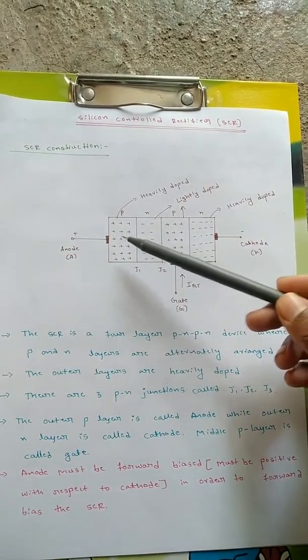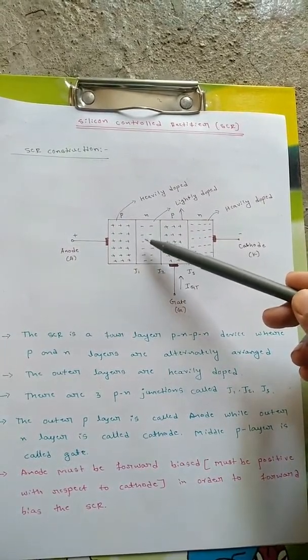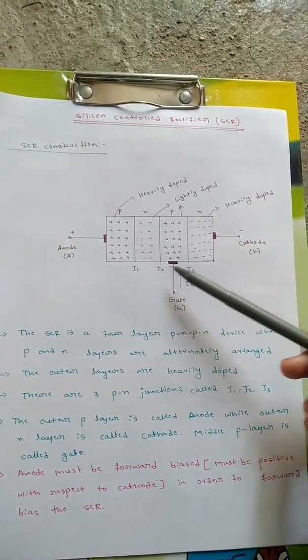So there are four parts: one, two, three, four, and the junctions will be three - one between P-N, one between N-P, and again one between P-N. So junction one, junction two, and junction three.